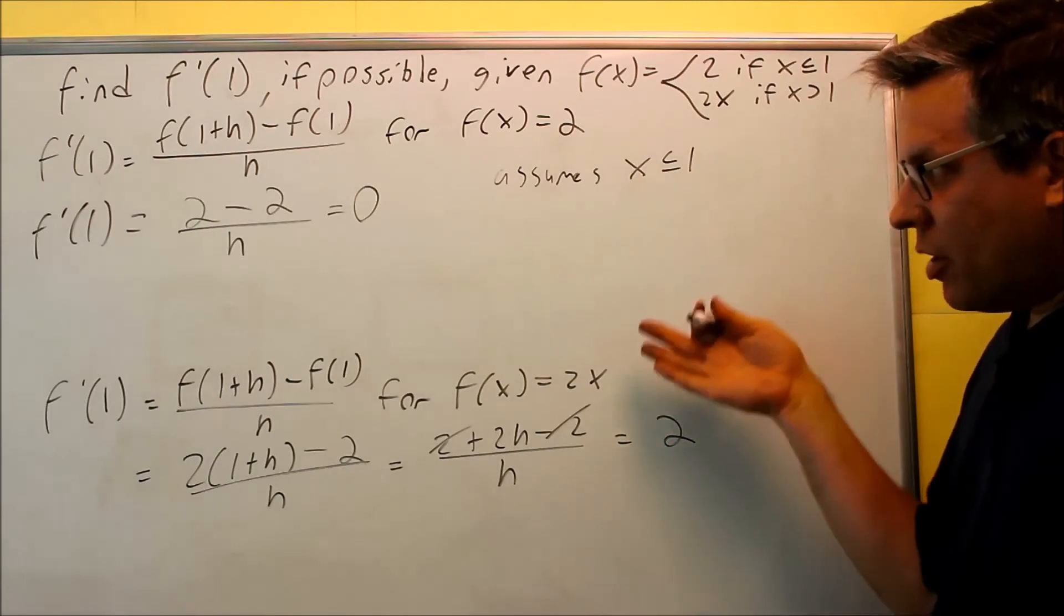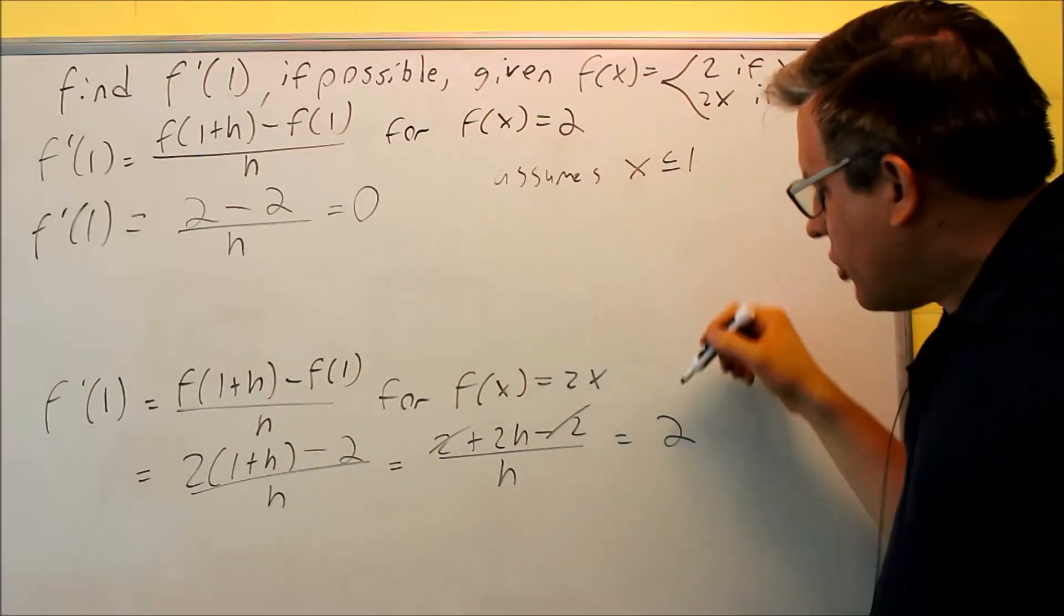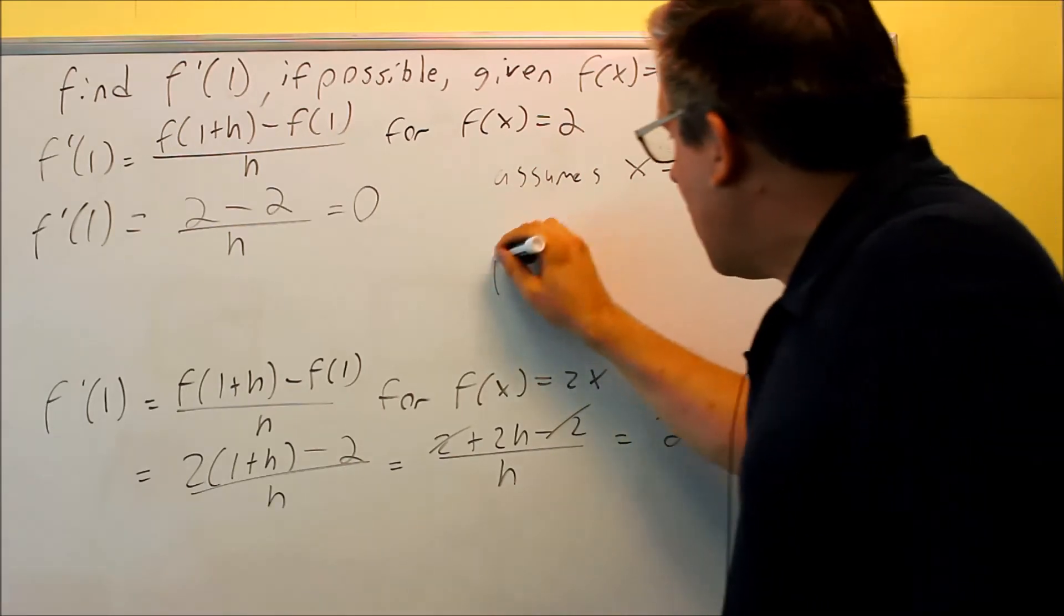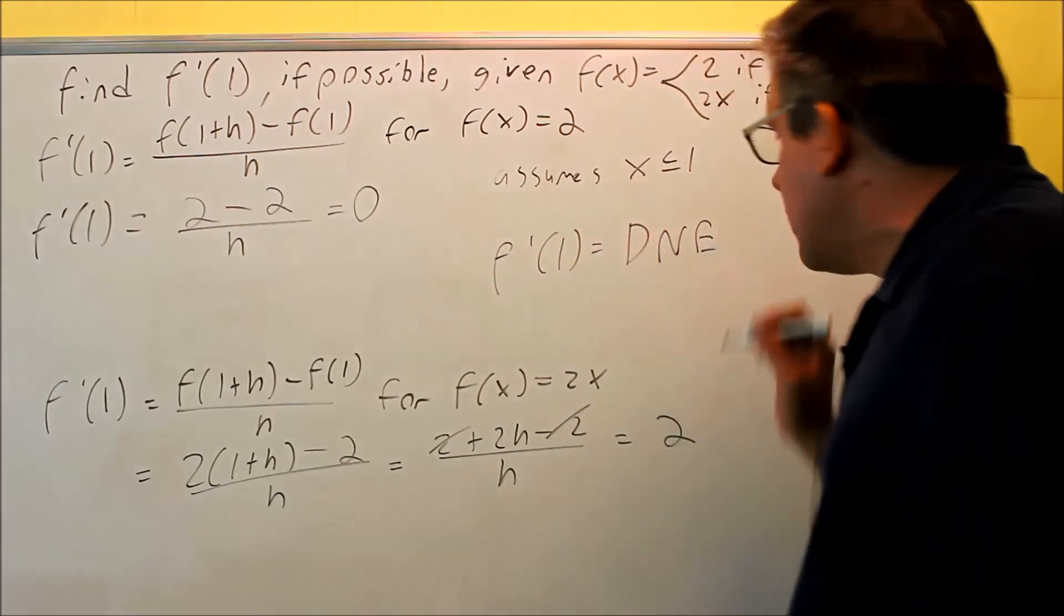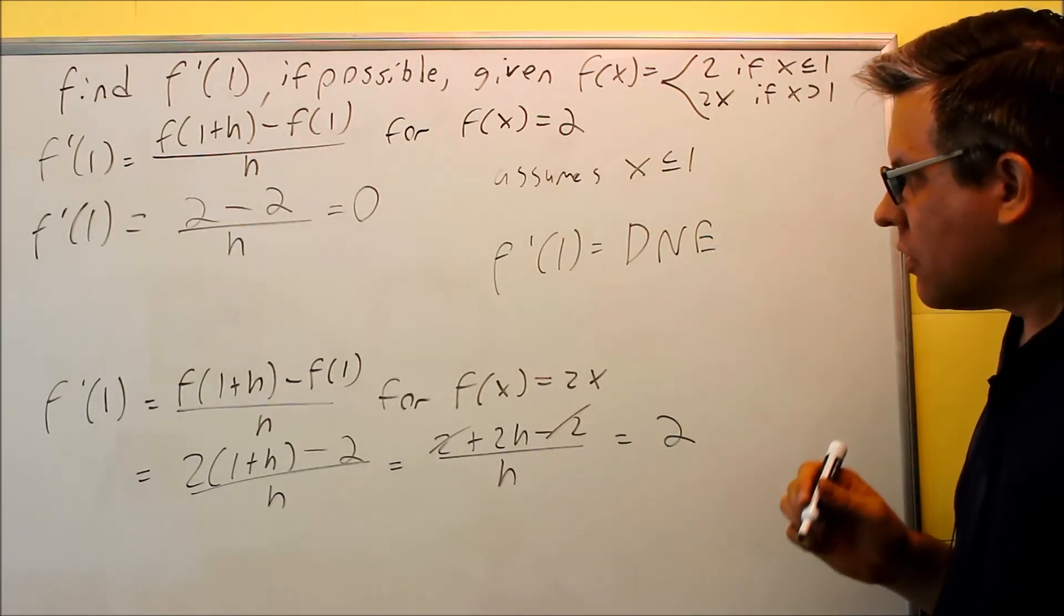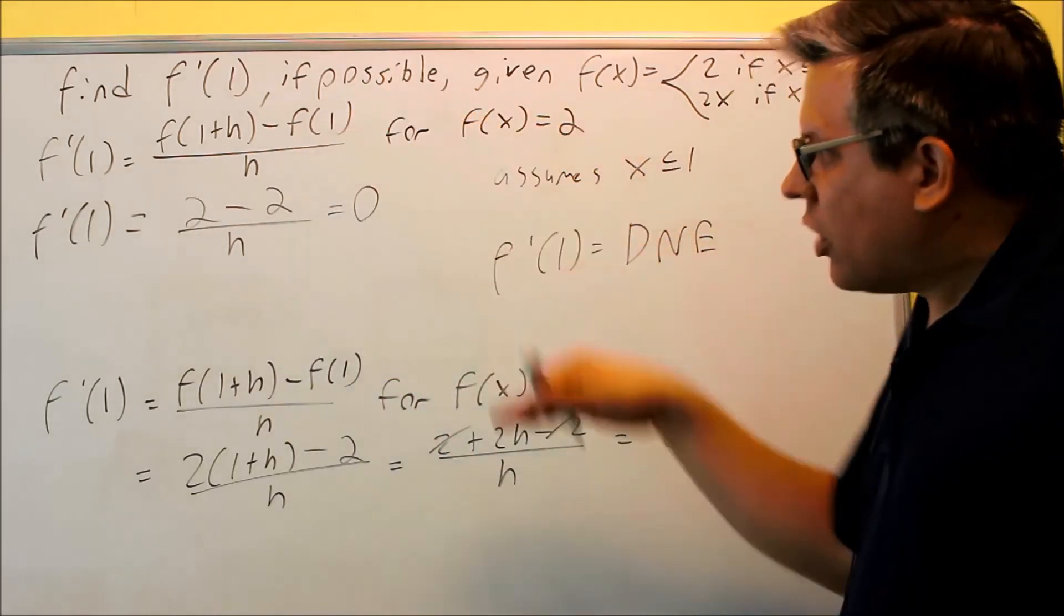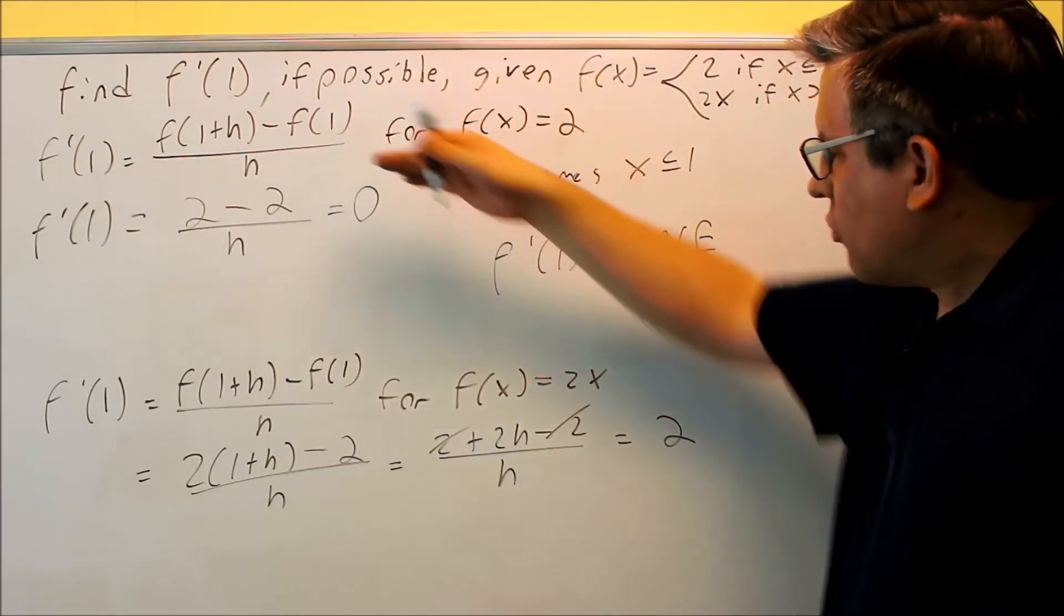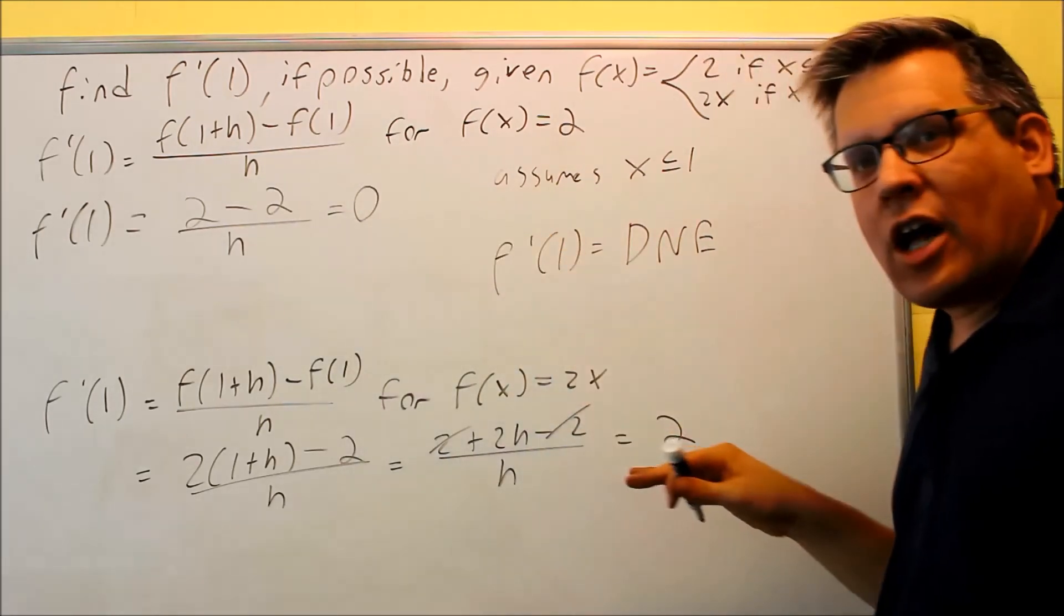The limit I did for each of these, because these are different, that means that f prime of 1 is going to be DNE. It does not exist. The reason why is because I did the limit process for each one, I did limit at this one and also at that one, and what happened was, I got two different values.